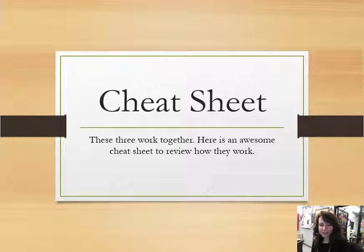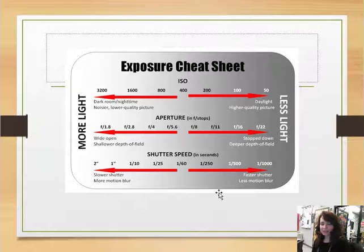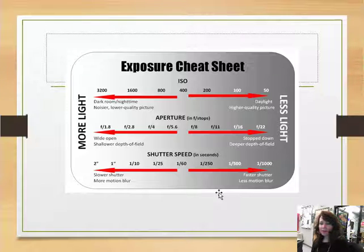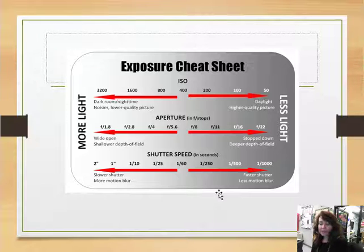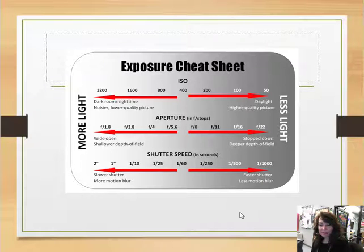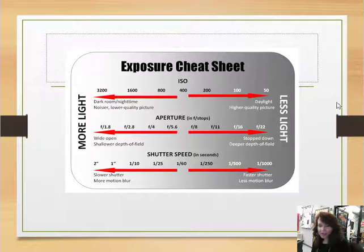Here's a cool cheat sheet I found online — it's awesome if you're working with a camera that has all the settings. This unit we're talking about all these more nitty-gritty details even if you're not using a camera like this, so if you ever get a nicer camera you'll understand these concepts. This is showing the ISO, the aperture, and the shutter speed and how they all relate to each other. I believe this was from Canon's website — they had this little exposure cheat sheet and there are a lot of them out there.